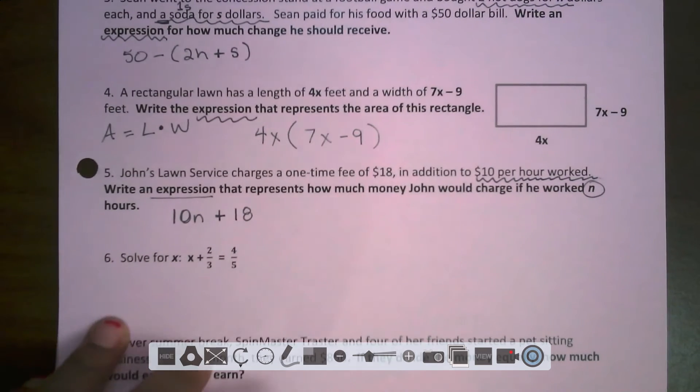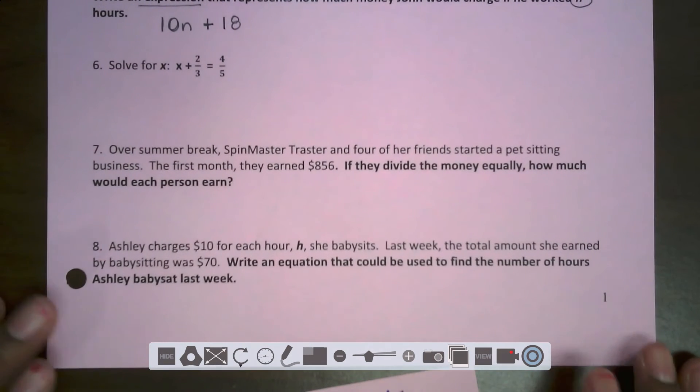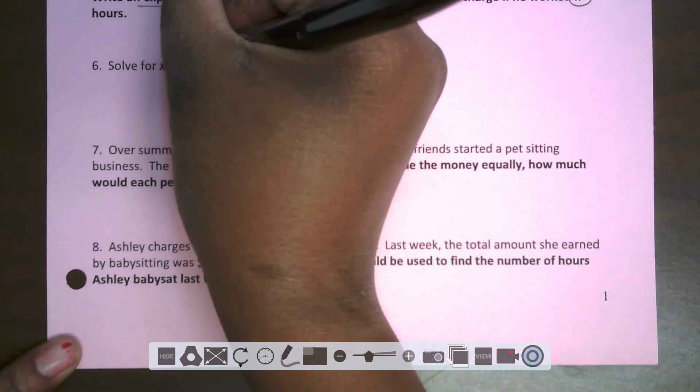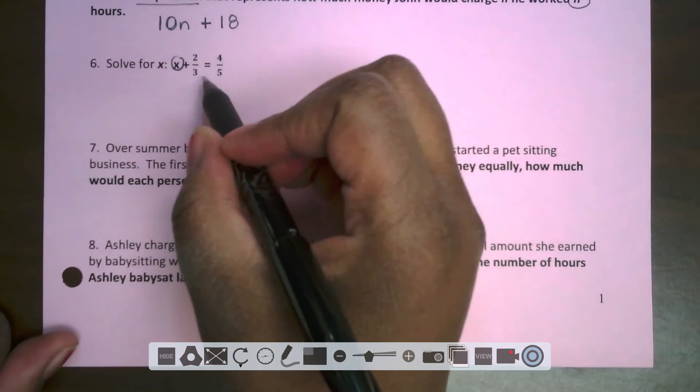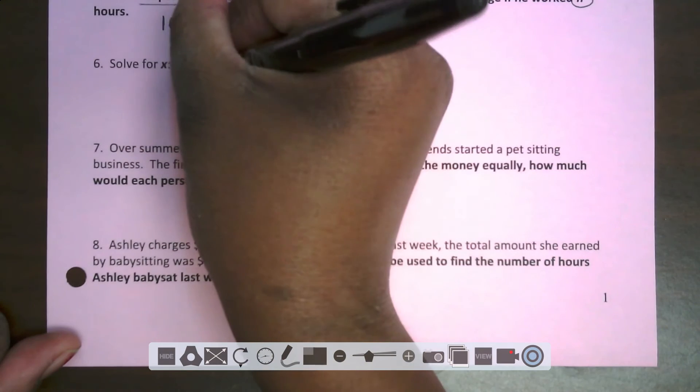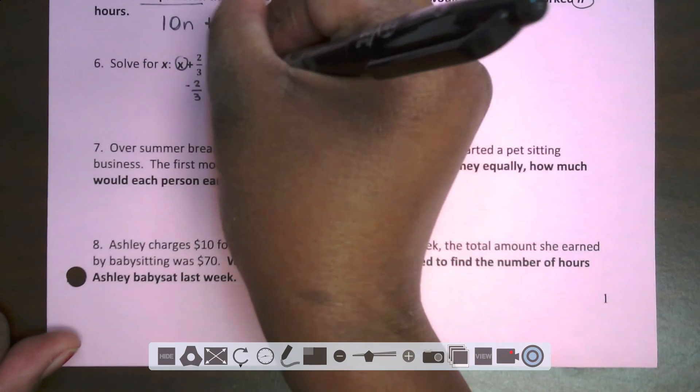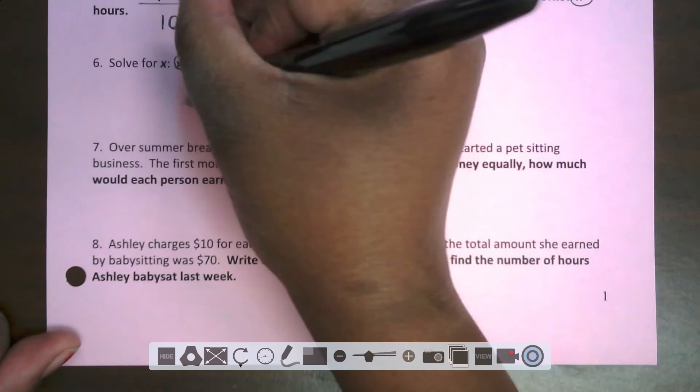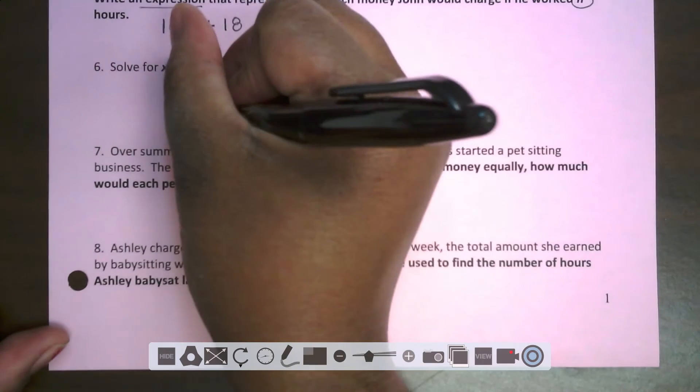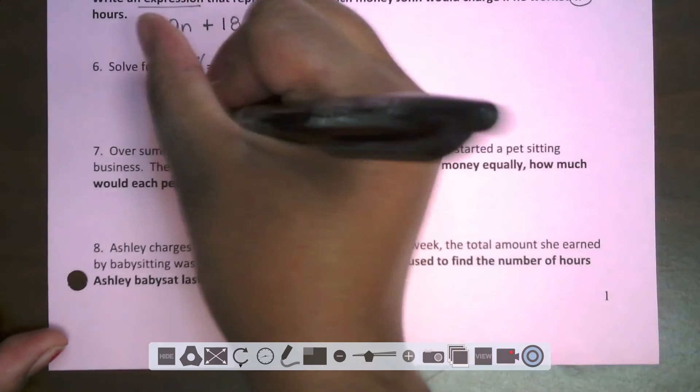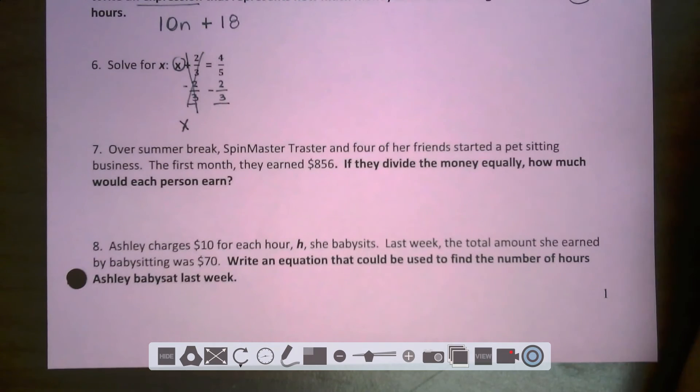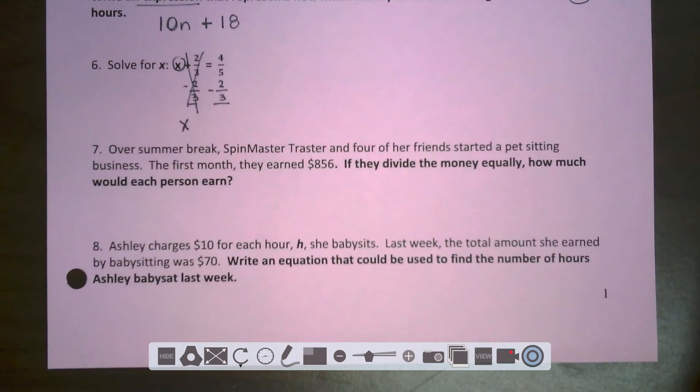For number six, this might have thrown you for a bit of a loop, especially if you did not remember how to add and subtract your fractions with different denominators. I want you to pay careful attention to what I do. There are a lot of steps. We're going to approach this like a one-step equation. We circle our variable. What's being done to it? I see that it's being added to two-thirds. So the inverse of that is to subtract two-thirds on both sides of the equal sign. These two-thirds here, they cancel out, leaving us with just X on this side.